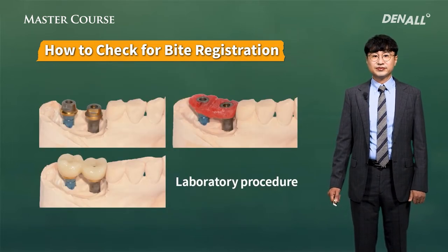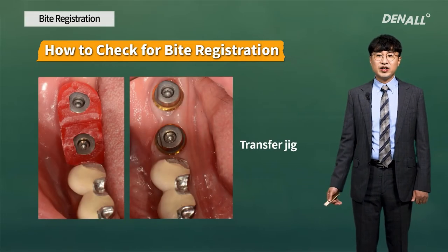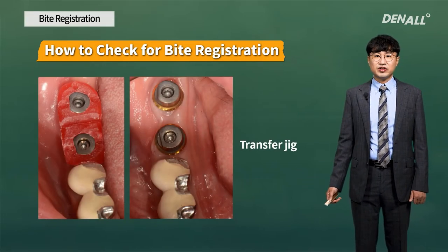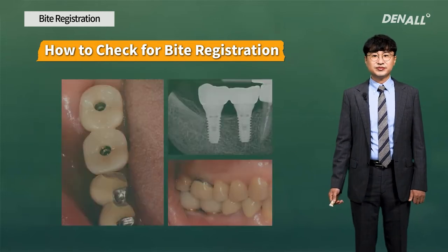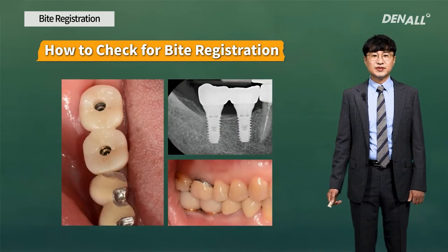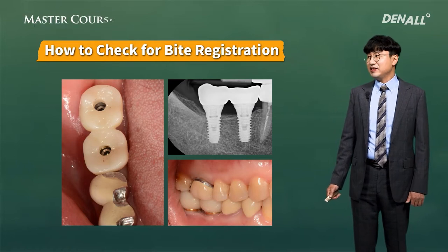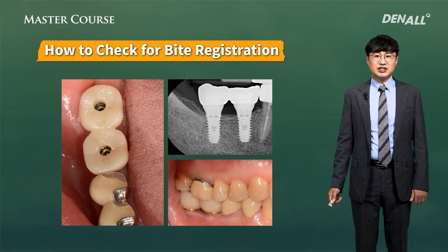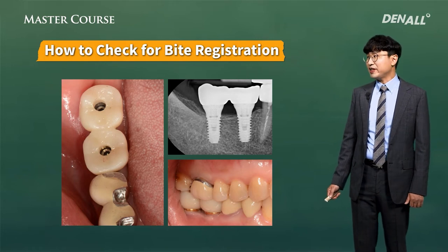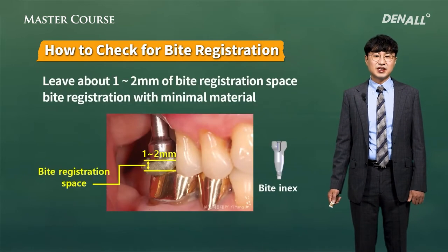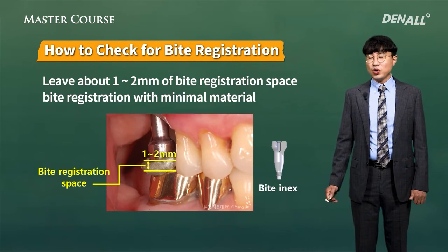A transfer jig is used for the 3D position of the cast to be transferred to the mouth. And this is how the final prosthesis is completed. Because bite registration was accurate, it saved a lot of time at the clinic and chair side. You could also use a bite index for bite registration — it's a good way.